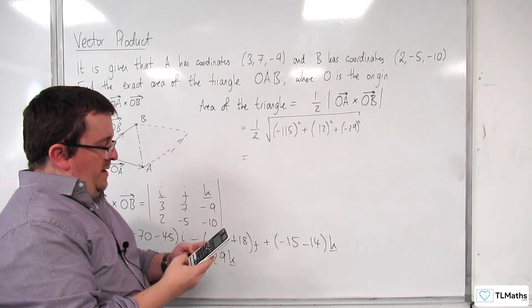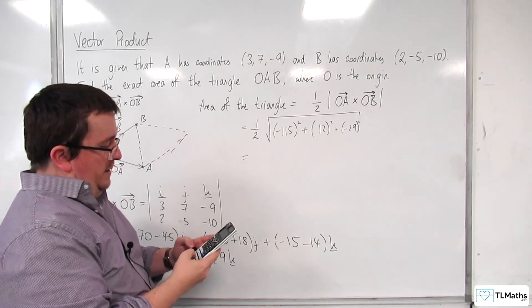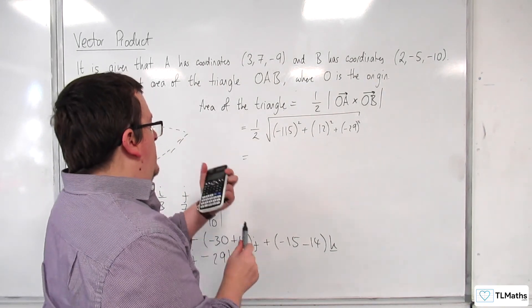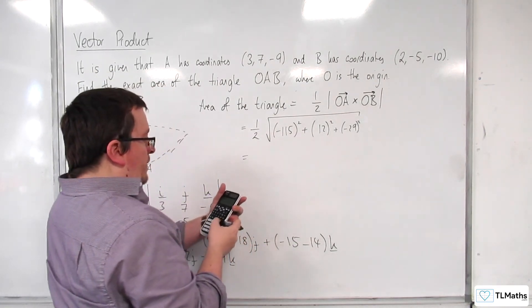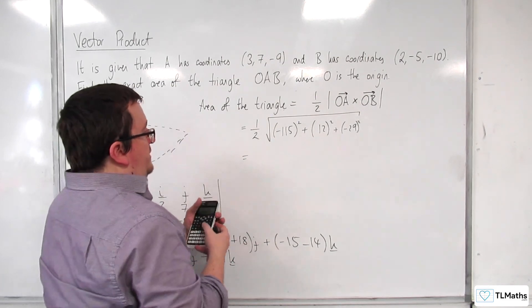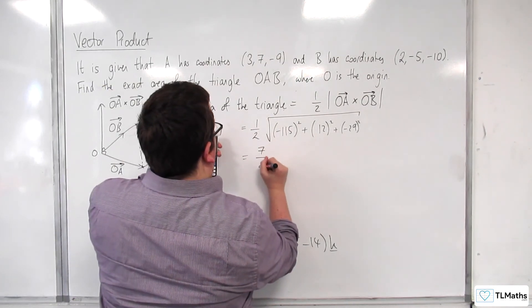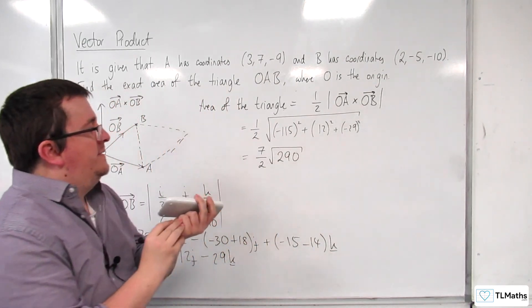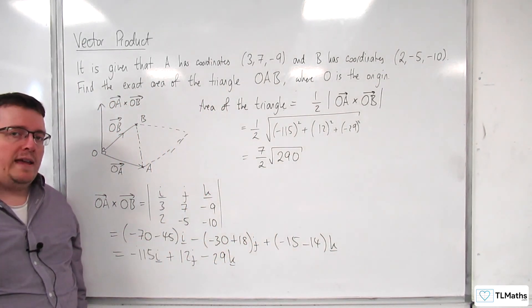So 115 squared plus 12 squared plus 29 squared, square root of that. We get one half of 7 root 290. So 7 halves root 290 is the exact area of the triangle OAB.